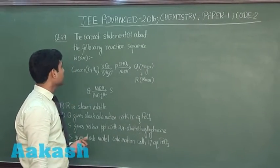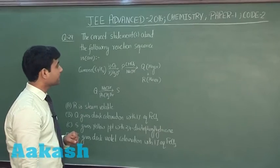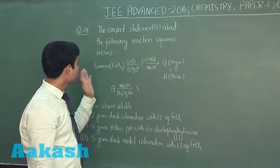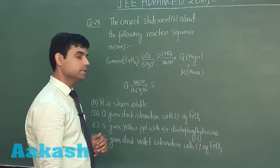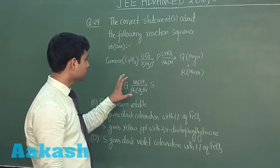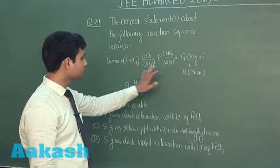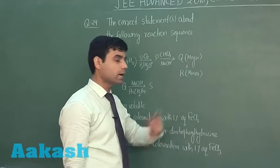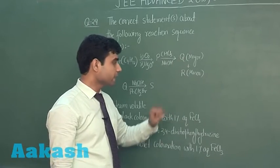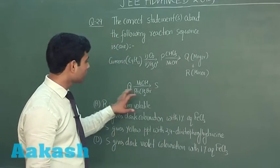This is the next question, question number 29, which says the correct statement or statements about the following reaction sequence. The sequence is given here: cumene gives us P, P gives us Q and R, Q is major and R is minor, and this Q gives us S.